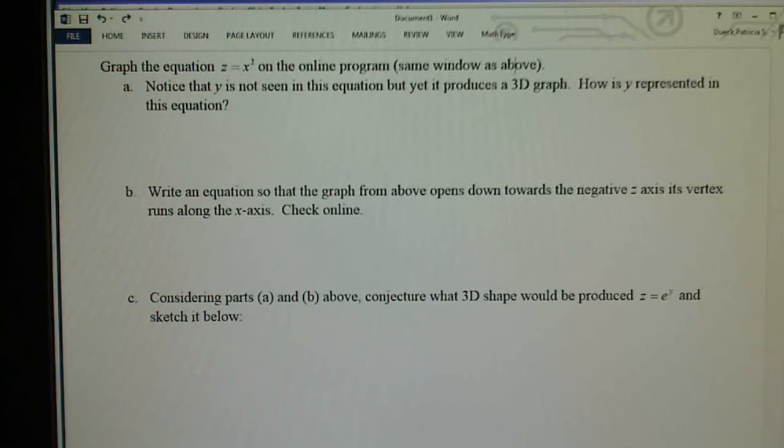This is a problem for my Calculus 3 handout from section 12.2, which is starting to mess around with surfaces and how they relate the equation with the three space graph. The problem says graph the equation z equals x squared on the online program. I'm going to use the window that I've been using in the other videos that I made.